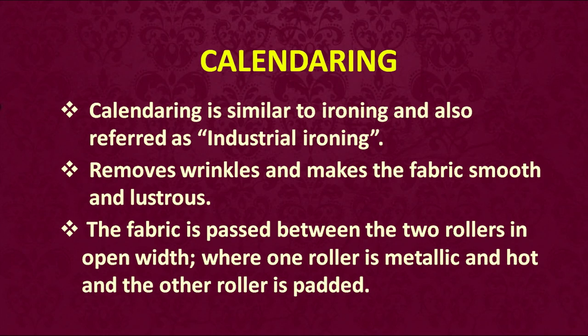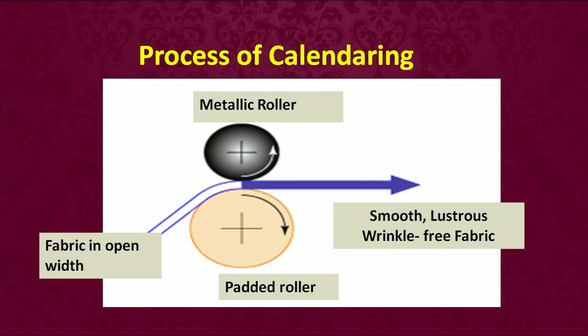Let us now talk about calendaring. Calendaring is similar to ironing and is also referred to as industrial ironing. It removes wrinkles and makes the fabric smooth and lustrous. The fabric is passed between two rollers in open width, where one roller is metallic and hot and the other roller is padded. You can see there is a metallic roller and a padded roller at the bottom, and the fabric is passed between these two rollers which makes it smooth, lustrous and wrinkle-free.